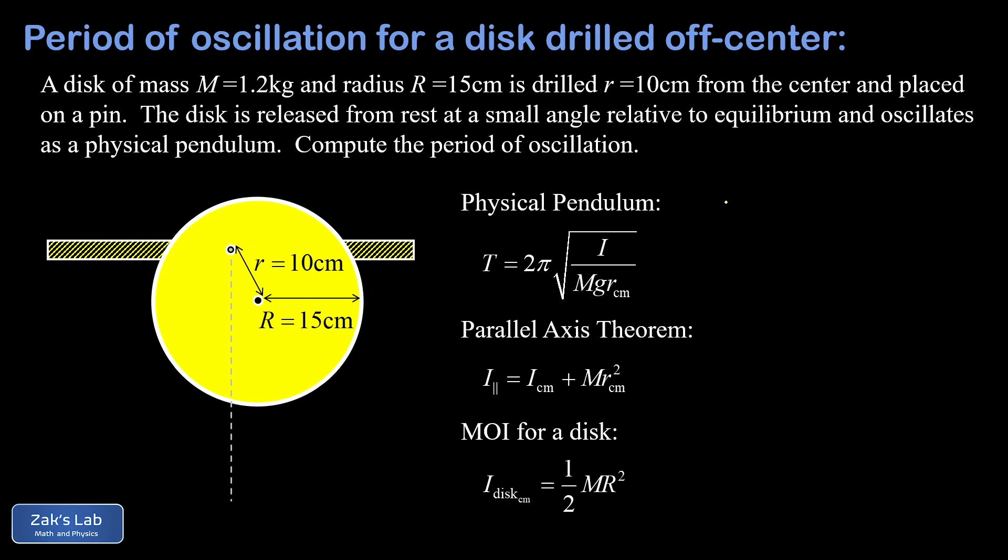The first thing I'm going to do is find the moment of inertia with respect to our rotation axis at that 10 centimeter mark. We're using the parallel axis theorem here, and the moment of inertia with respect to the center of mass is one half M·R² and then I have to tack on this extra term Mr² center of mass.